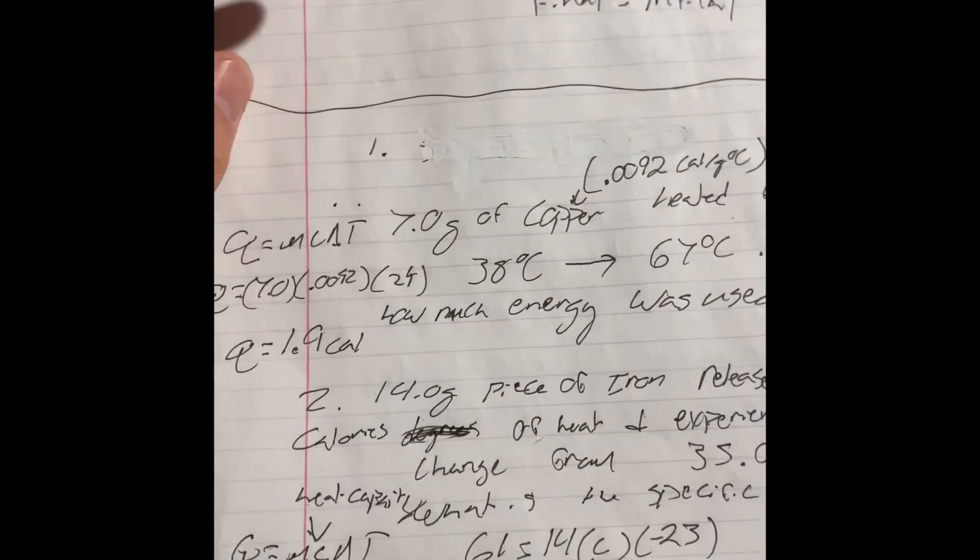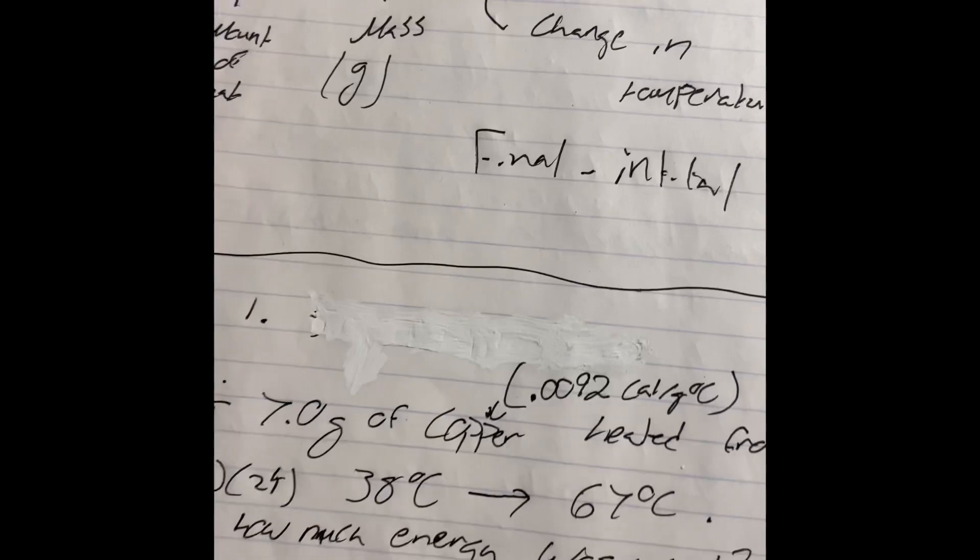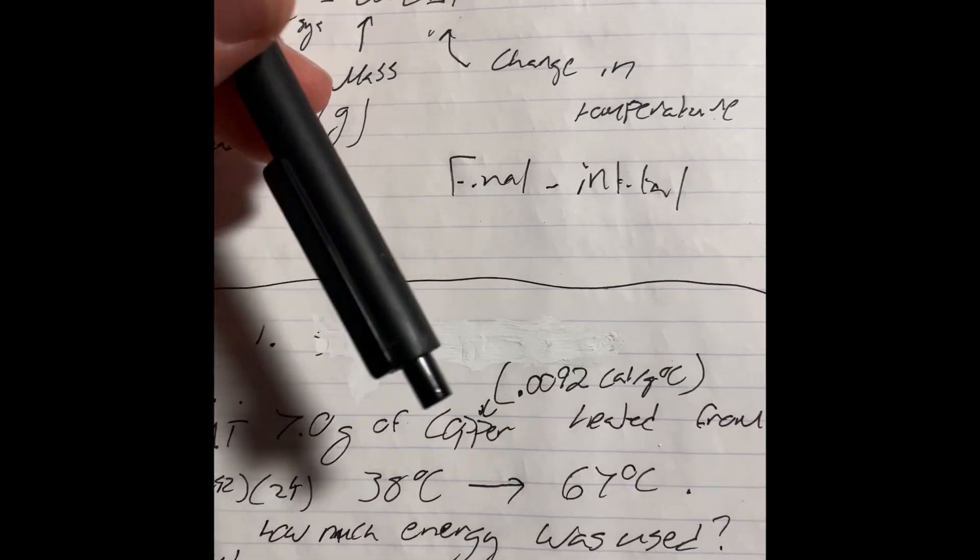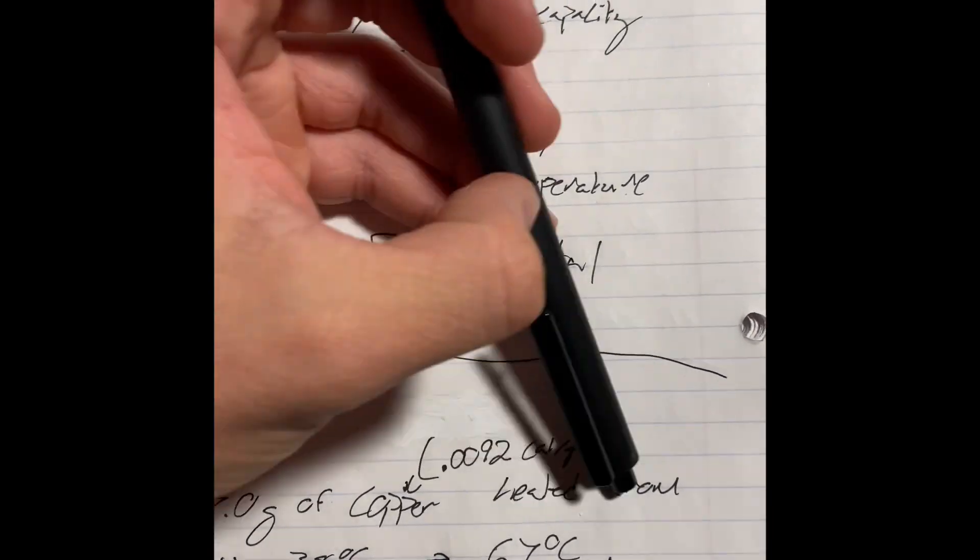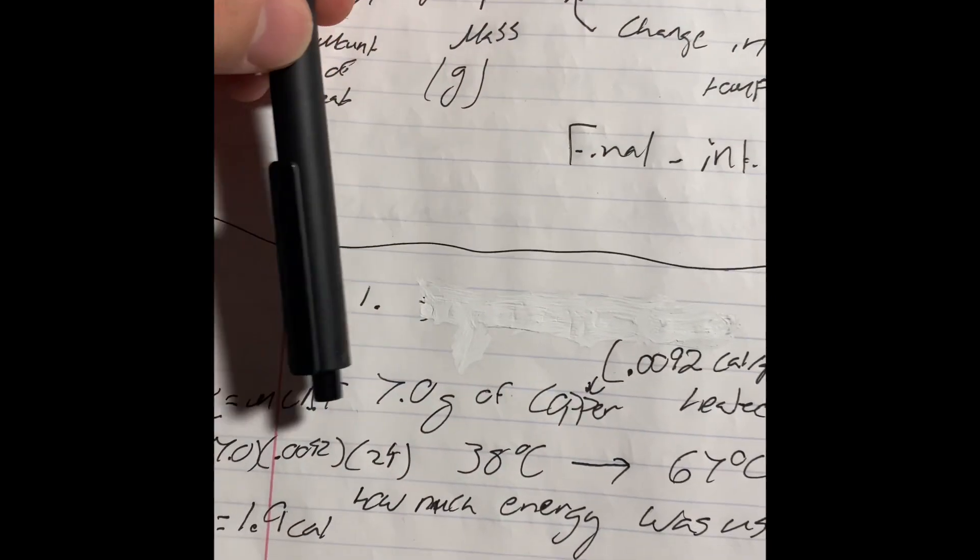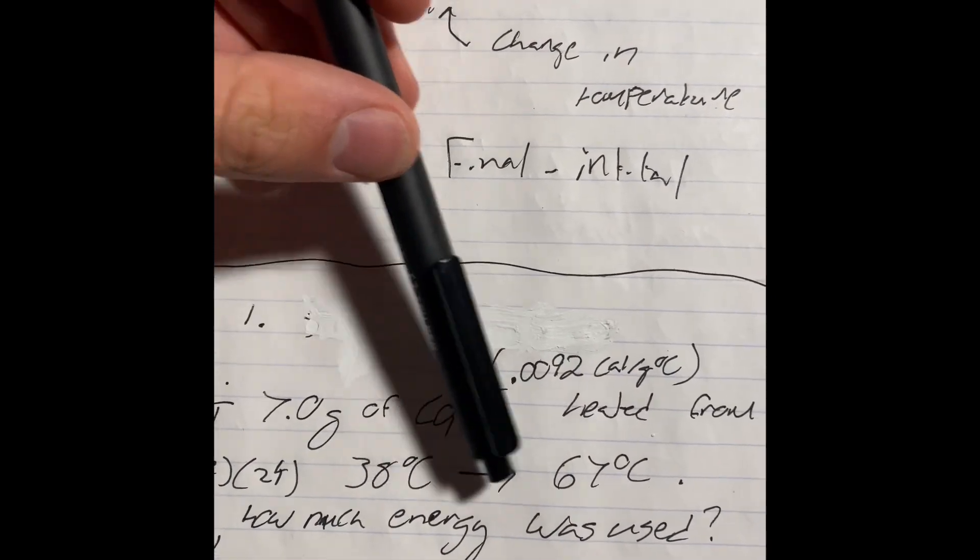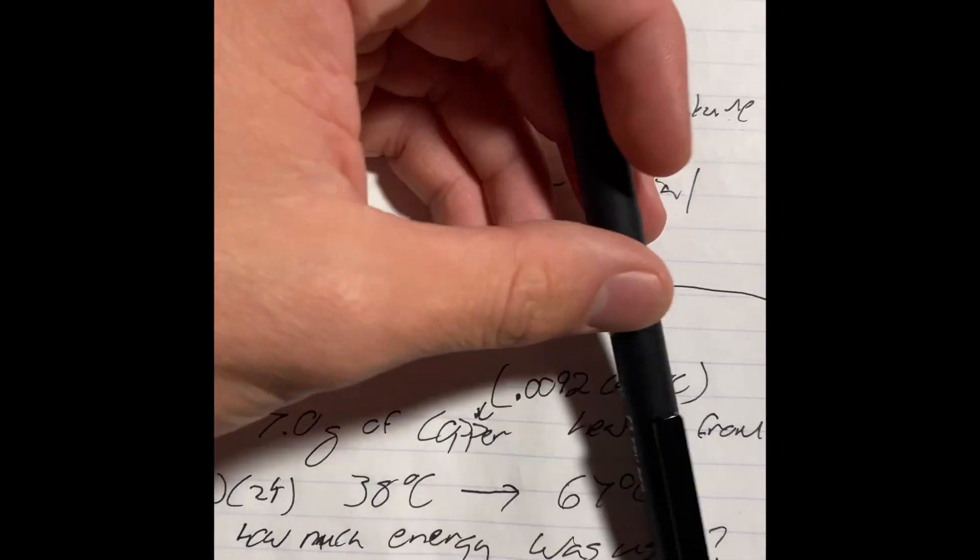So, I have a couple practice problems. The first one is a 7 gram sample of copper with this specific heat capacity is heated from 38 degrees Celsius to 67 degrees Celsius, how much energy is used.